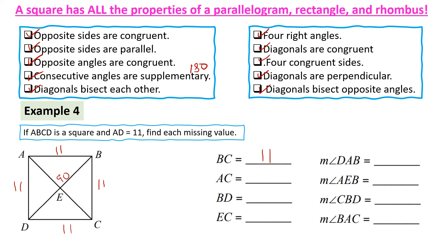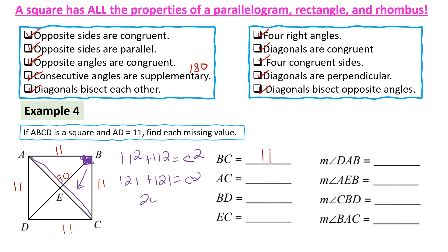Since it's a square, there's a right angle at the corner, and the sides are both 11. AC is the hypotenuse because it's opposite the right angle. Using the Pythagorean theorem: 11 squared plus 11 squared equals c squared. That's 121 plus 121, which equals 242. Taking the square root gives c equal to 15.6, so AC is 15.6.